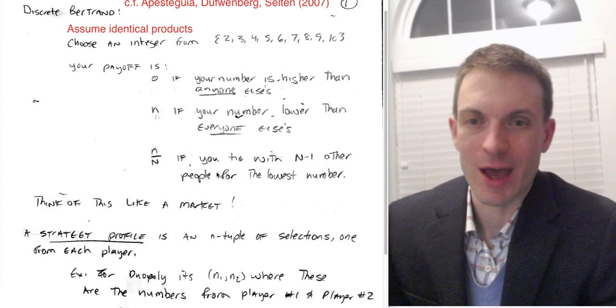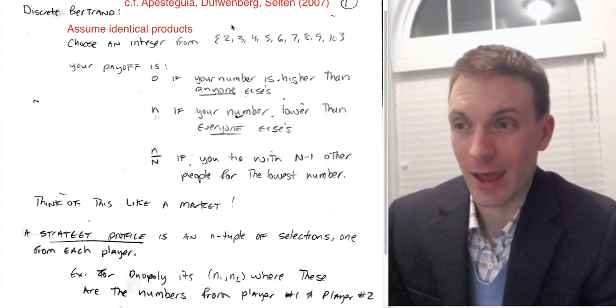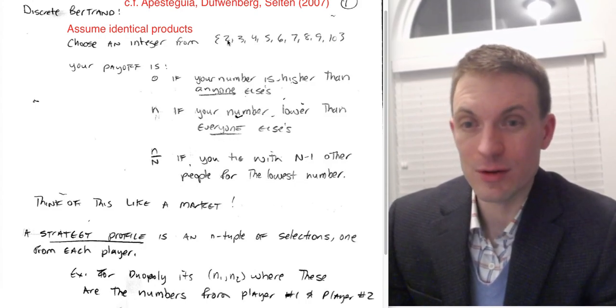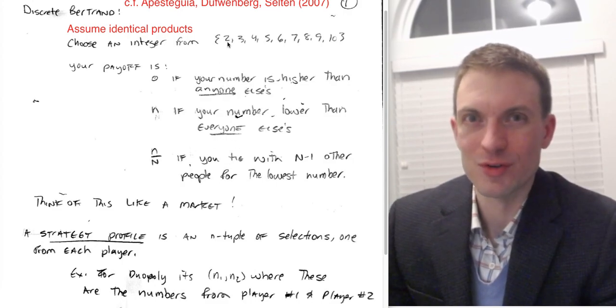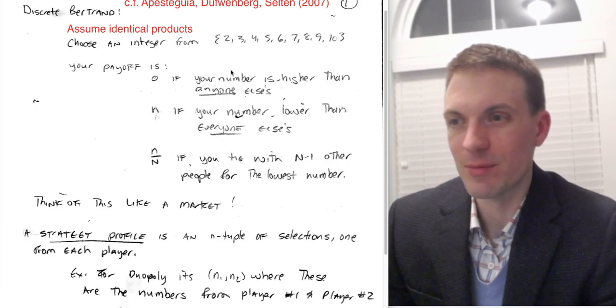So if you have two firms that tie at 2, then the payoff would be 1 each. If you have two firms tying, or if you have three firms tying at 2, what would your payoff be? Well, 2 divided by 3, so 2 thirds.